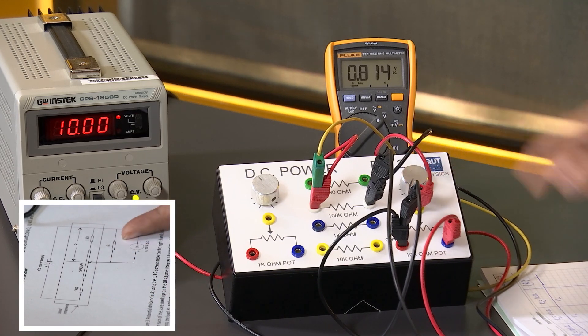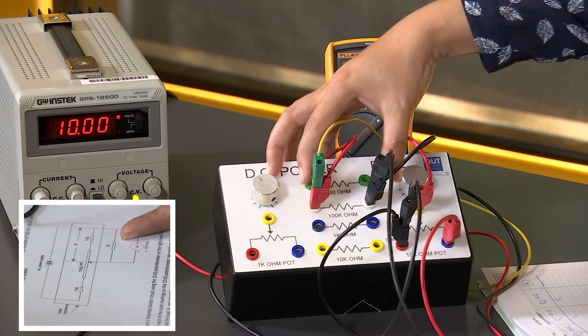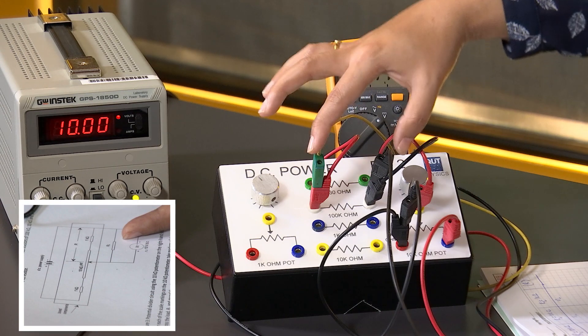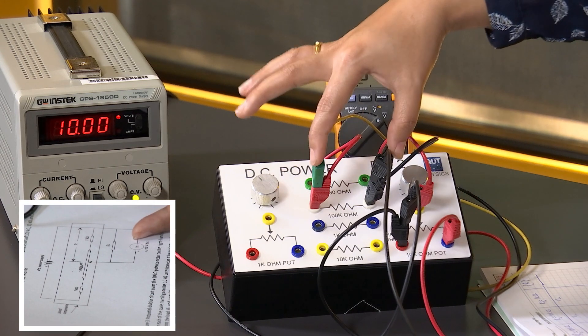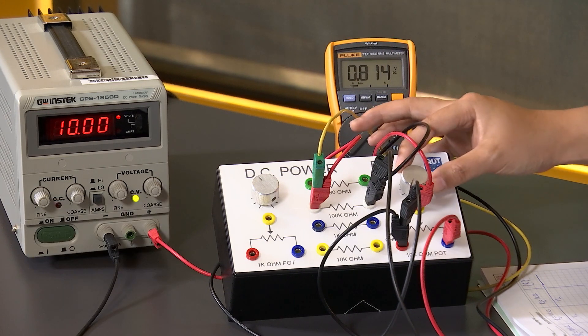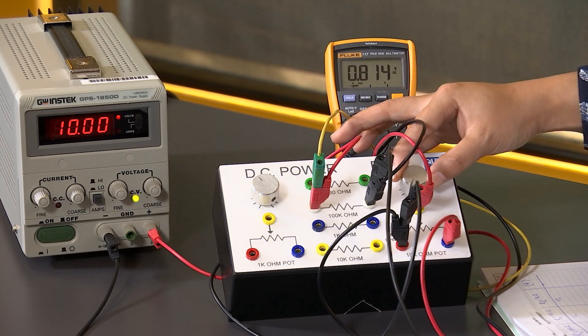And we have a load resistance which we will start with 100 kilo ohms, which is given here. Then we are going to measure the voltage across this load resistance using our multimeter for different values of the resistance in the variable resistor.